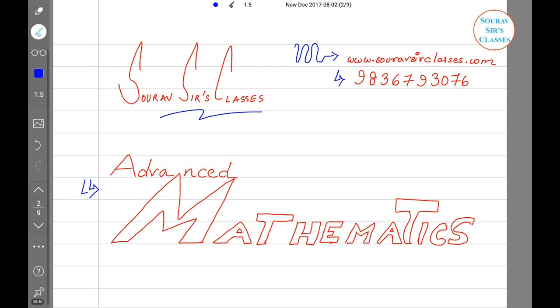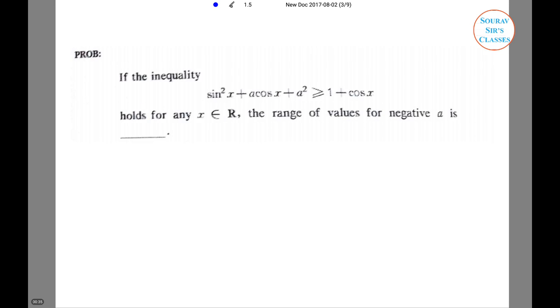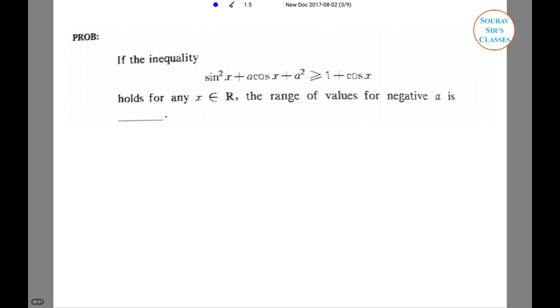So this is our question. The problem is: if the inequality sin²x + acos x + a² ≥ 1 - cos x holds for any x that belongs to real numbers, the range of values for negative a is blank, and we need to fill this blank space. So you must be wondering how to do it. We are here to help you. Let's get started.